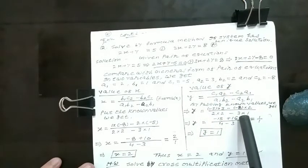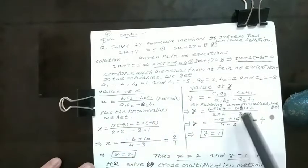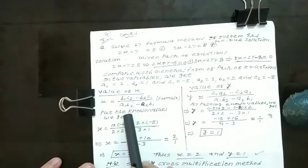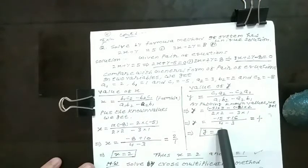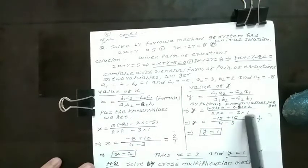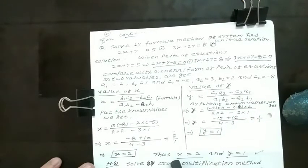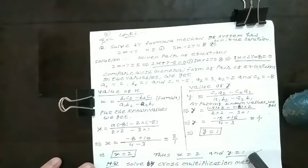Put 2 here. A1b2 minus a2b1. We multiply each, get the difference, we get 1 upon 1. That is, y is equal to 1. Thus x is equal to 2 and y is equal to 1.